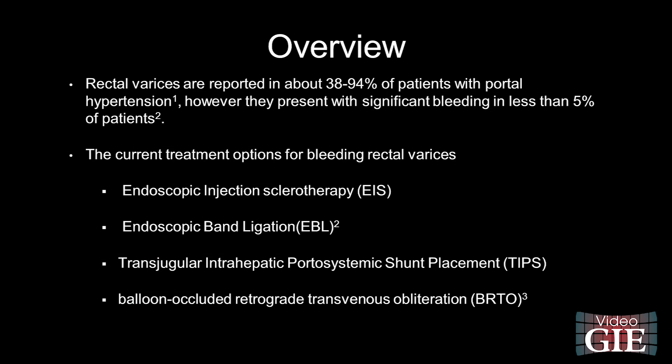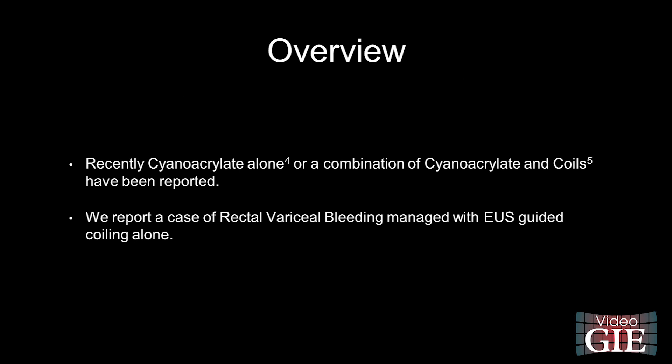Rectal varices are reported in about 38–94% of patients with portal hypertension. However, they present with significant bleeding in less than 5% of patients. The current treatment options for bleeding rectal varices include endoscopic injection sclerotherapy, endoscopic band ligation, transjugular intrahepatic portosystemic shunt placement, balloon occluded retrograde transvenous obliteration, and cyanoacrylate alone or in combination with coils. We report a case of rectal variceal bleeding managed with EUS guided coiling alone.